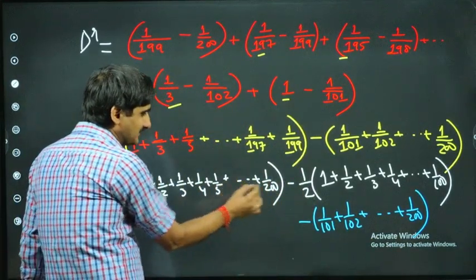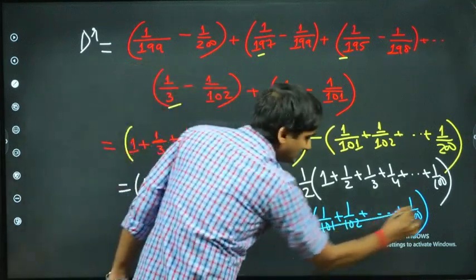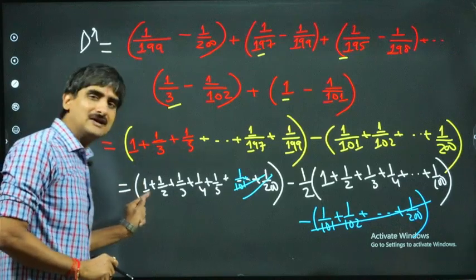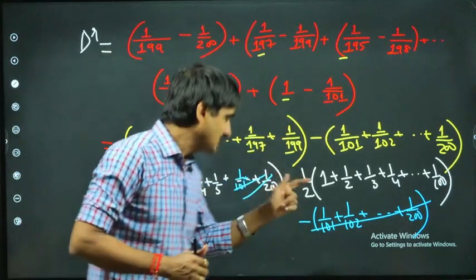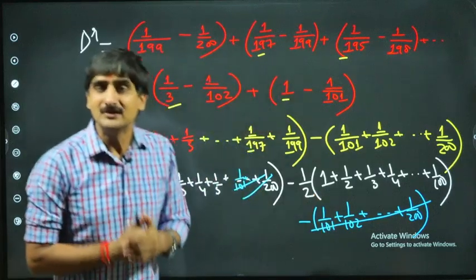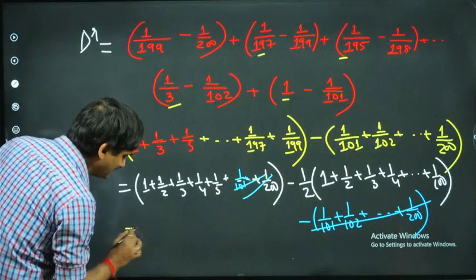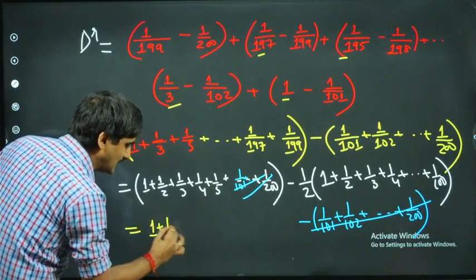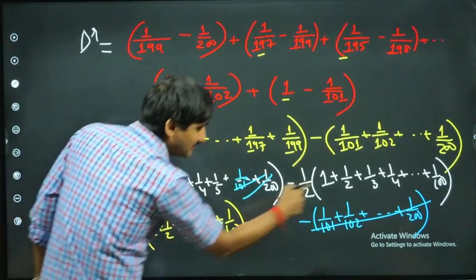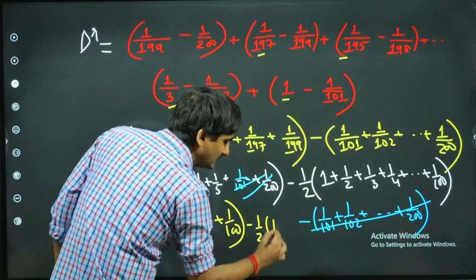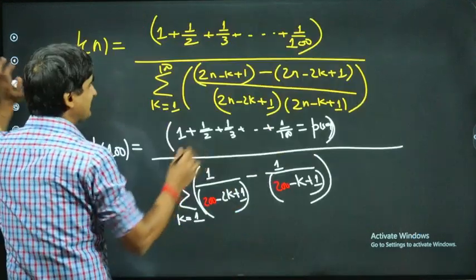Now the terms from 1/101 to 1/200 cancel out — the first bracket contains all numbers from 1 to 1/200, and the last part has all from 1/101 to 1/200, so those cancel. What remains in the first part is just 1 + 1/2 + 1/3 + ... + 1/100, and then minus 1/2 times (1 + 1/2 + ... + 1/100).